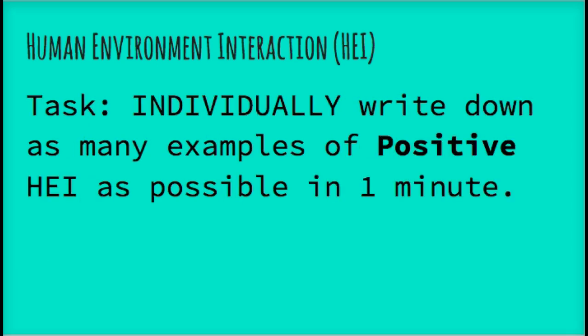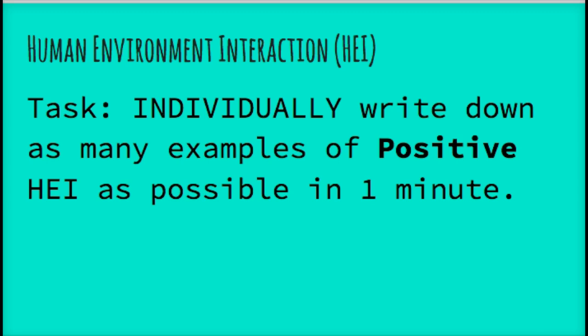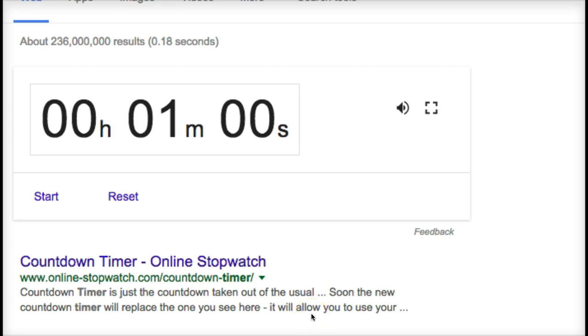Now you are going to need a new sheet of paper that should be in your packet. You're going to focus on the positive column first. I'm going to put a timer up for a minute and you will have a minute to write down as many possible examples of positive HEI as you can think of. This is individual — so you're with your partner, but individually you're going to make this list.